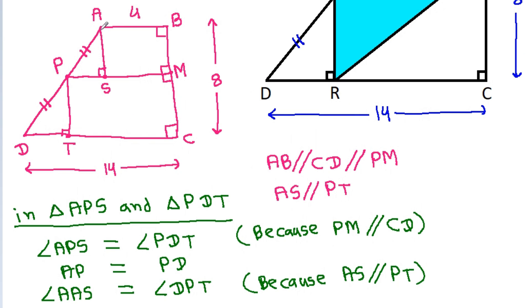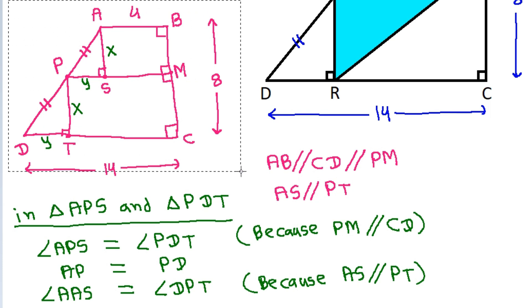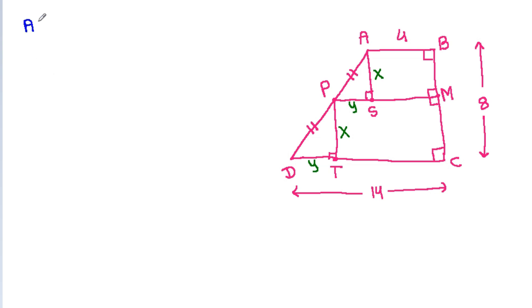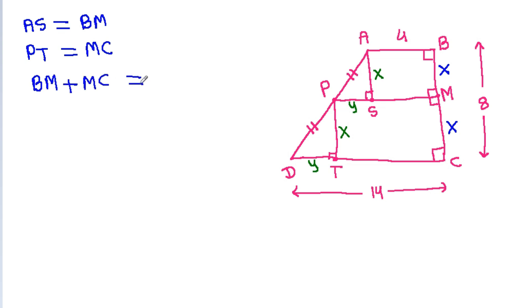So, if AS is X, then PT will be X, and if PS is Y, then DT will be Y. Now, AS will be equal to BM and PT will be equal to MC. So BM will be X and MC will be X. BM plus MC equals BC, so X plus X equals 8, meaning X equals 4.